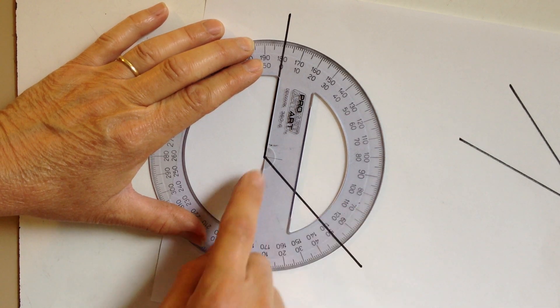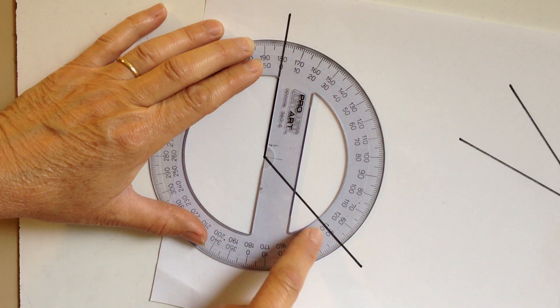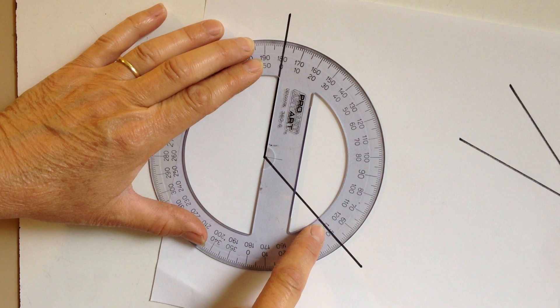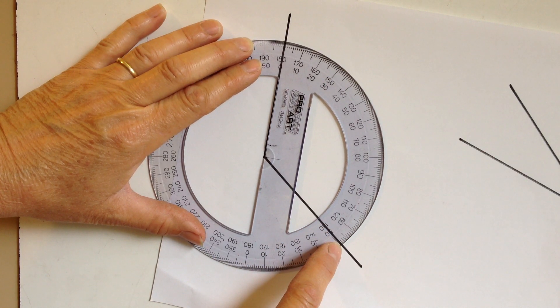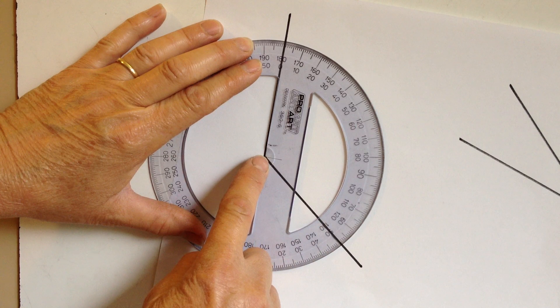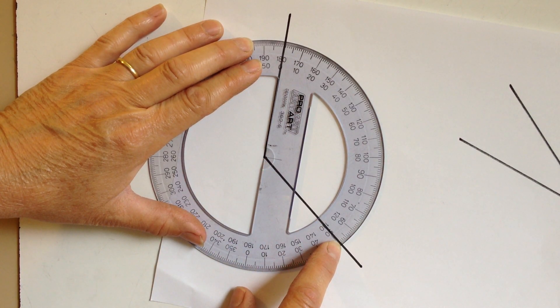Now I have that lined up on zero, so then 130, a little bit short of 130, 129, 128 degrees. It kind of depends on where I put my center. Notice how a little shift there made a little difference.